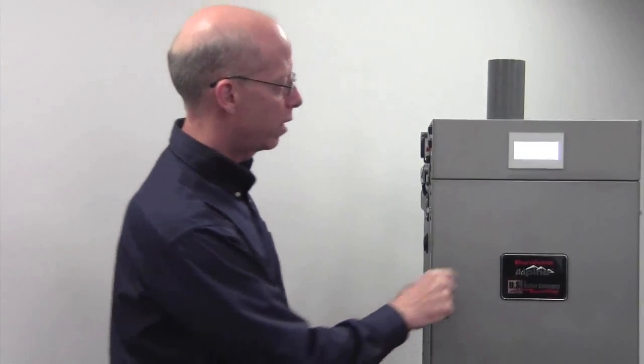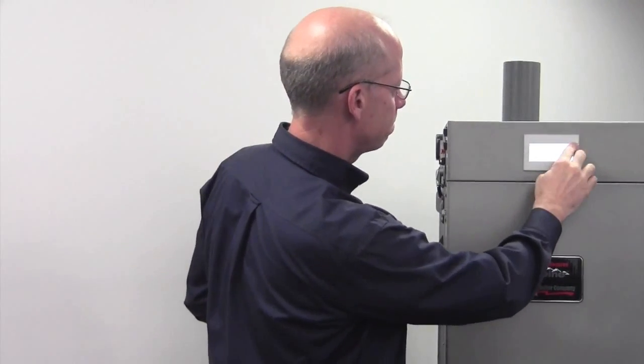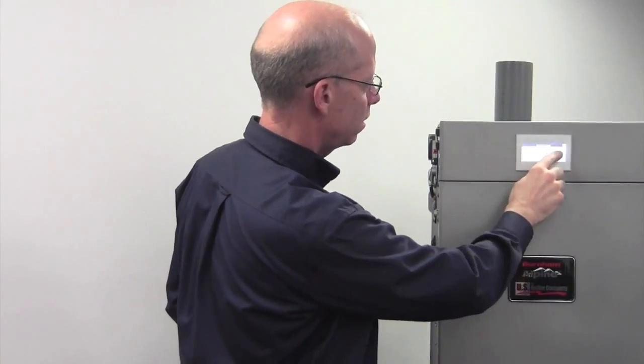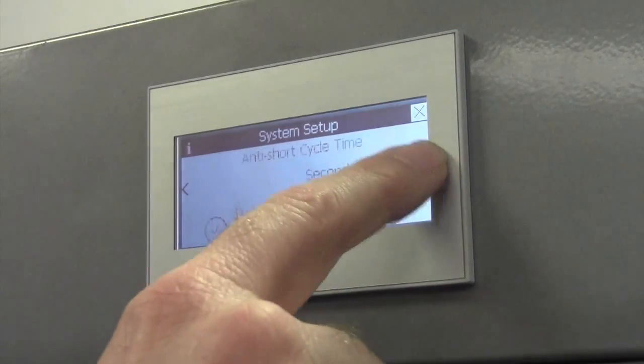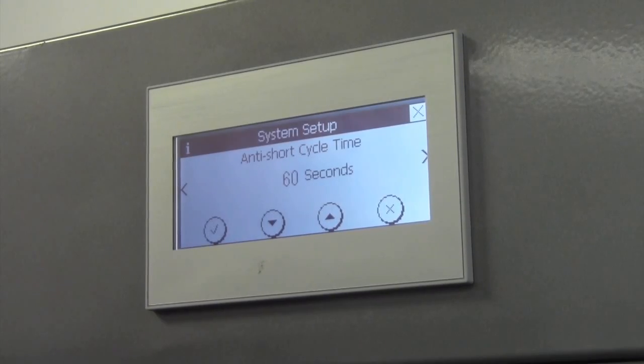One of our goals, the first goal I'm going to talk about, we do things to prevent cycling, to reduce the amount of cycling that we're experiencing. One thing we added was, in the system display, we added anti-short cycle time.